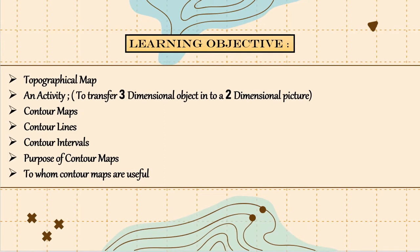Let us discuss our learning objectives for today's video. We are going to learn what is a topographical map, and we are also going to see an activity which will help us understand how to transfer a three-dimensional object into a two-dimensional picture. Then we will learn what is contours and contour maps, contour lines, contour intervals, and the purpose of contour maps and to whom they are useful.